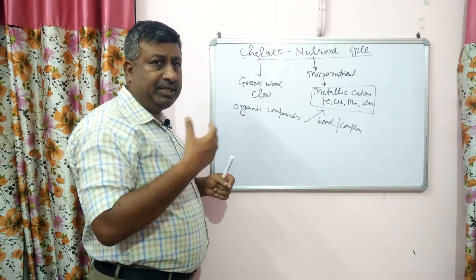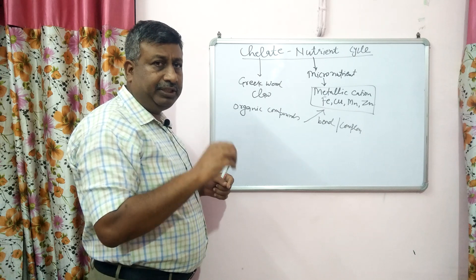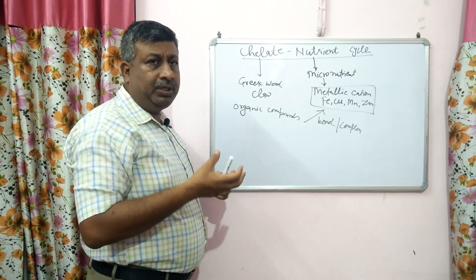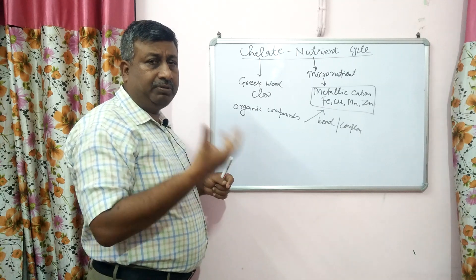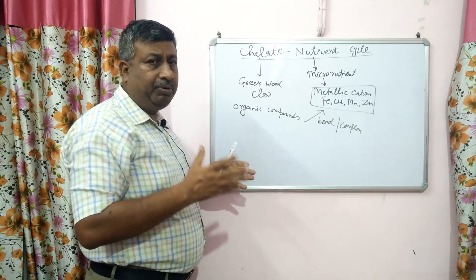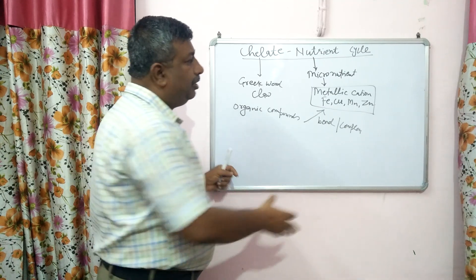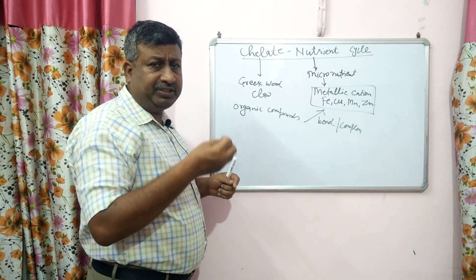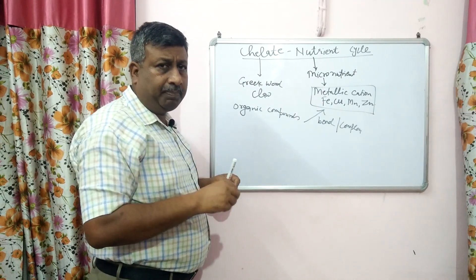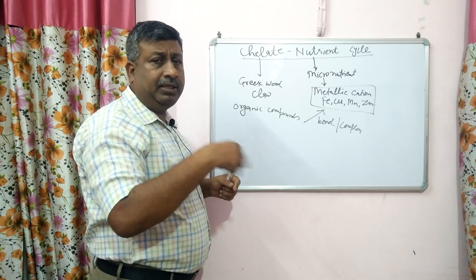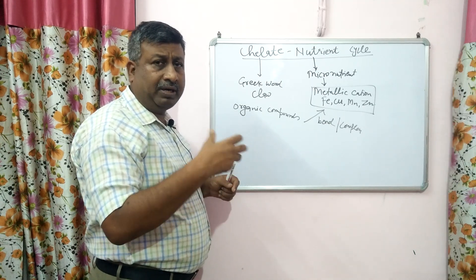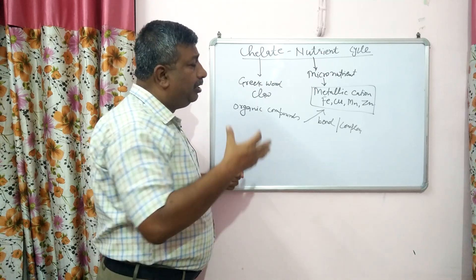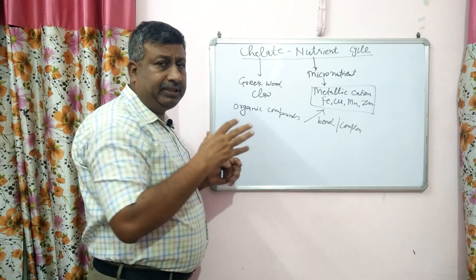After weathering or after fertilizer application, micronutrients are present in the soil. These nutrients are subjected to forming insoluble compounds and become precipitated or adsorbed onto other compounds. That is why their availability is decreased. The problem with these metallic cations is that they are either precipitated as insoluble compounds or adsorbed onto clay, organic matter, oxides, hydroxides, or carbonates, which reduces their availability.